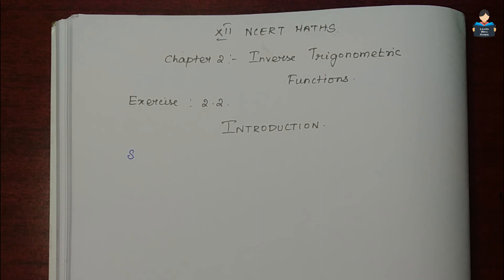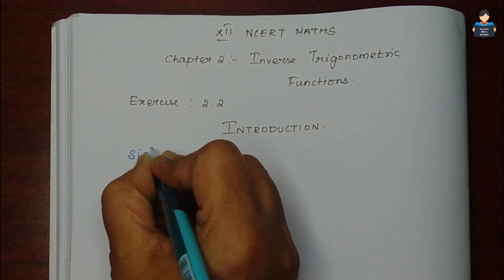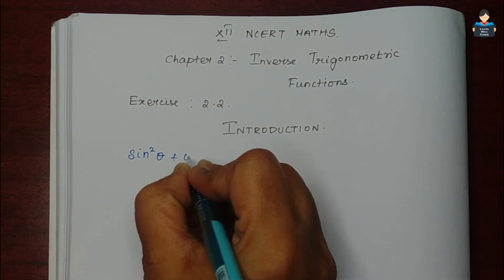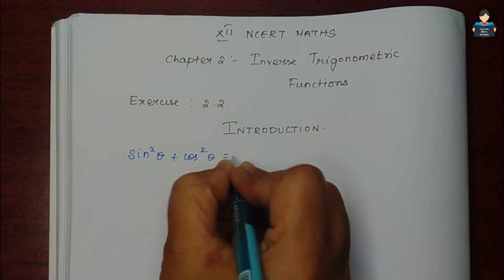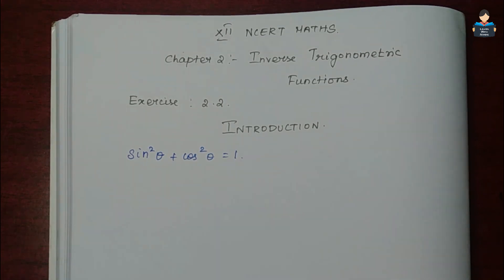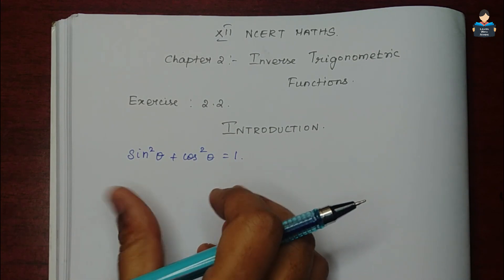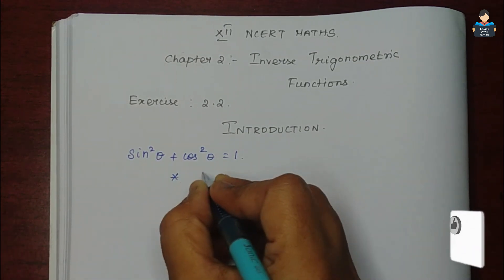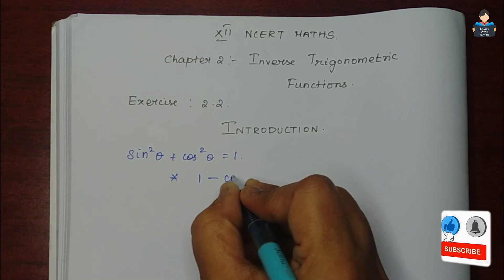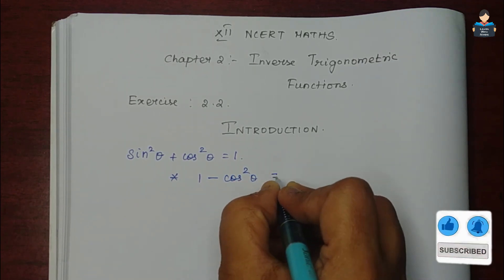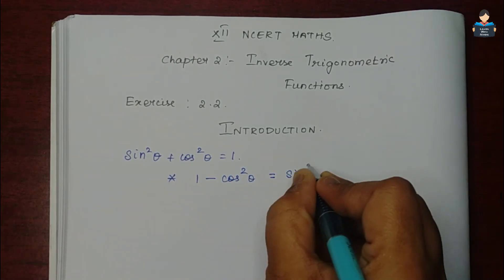The first formula from 10th standard trigonometry is: sin²θ + cos²θ = 1. From this first formula we can derive: 1 - cos²θ = sin²θ.